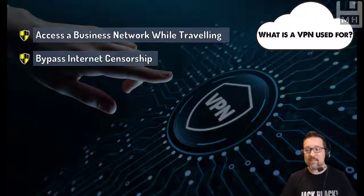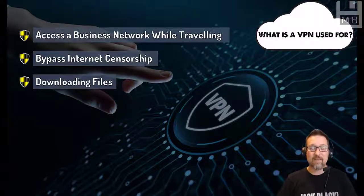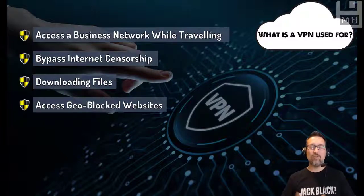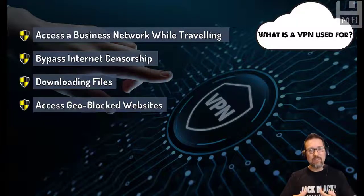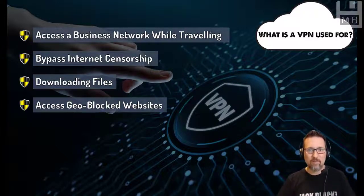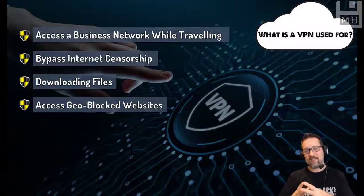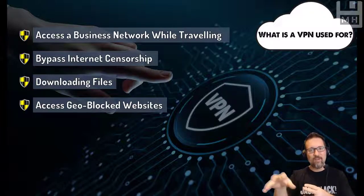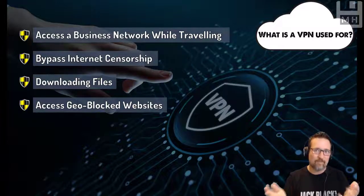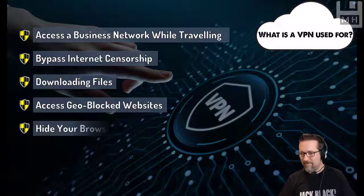Other reasons include bypassing internet censorship, downloading files like movies or music, and accessing geo-blocked websites. Geo-blocked sites are limited to people from specific countries only. For example, BBC shows in Great Britain will block you if you're not in the UK. Using a VPN, you connect to a computer in the UK and can then access the BBC and watch your favorite shows.